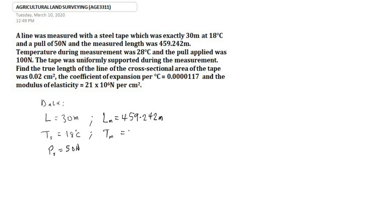The temperature during measurement is 28 degrees centigrade, and the applied pull during measurement is 100 newtons. The tape was uniformly supported during the measurement. We need to find the true length of the line, given the cross-sectional area of the tape.